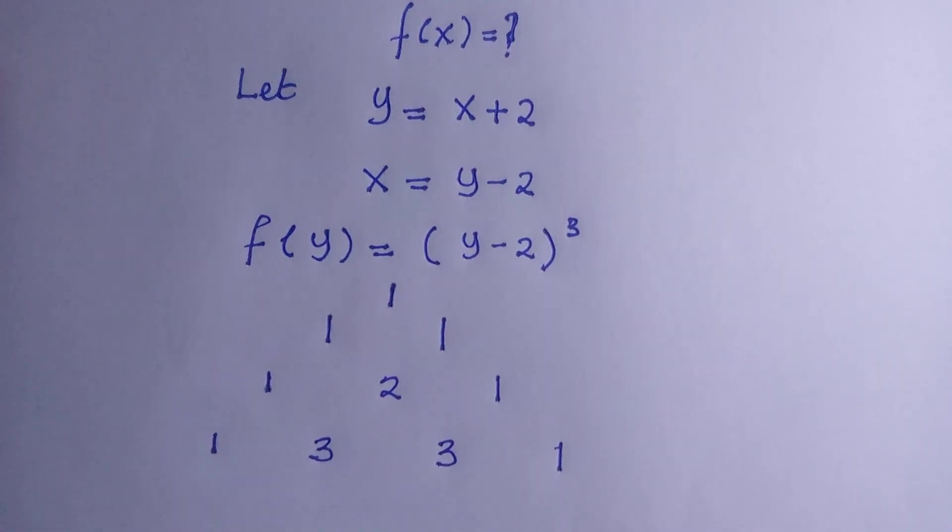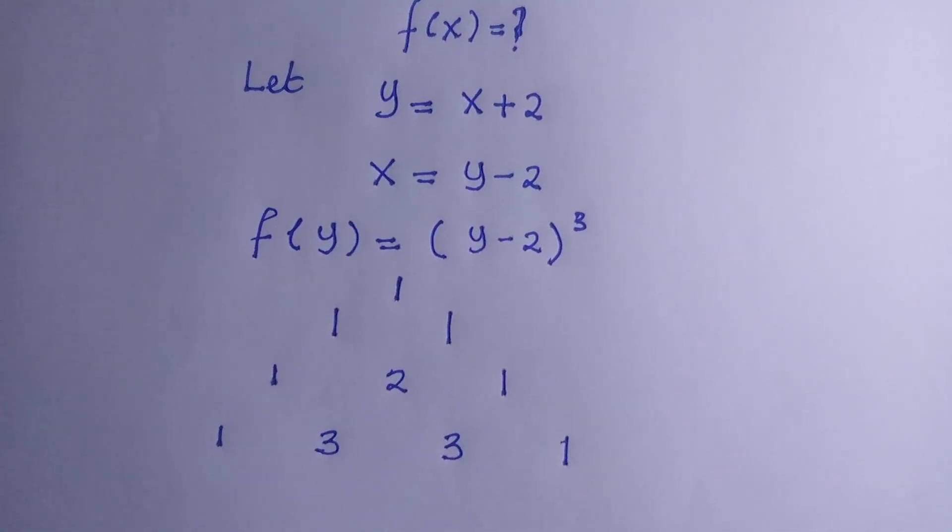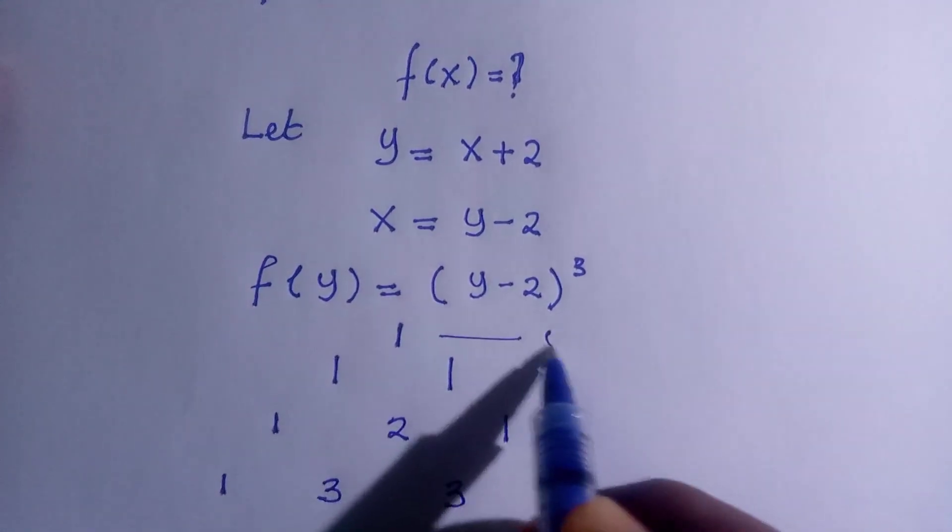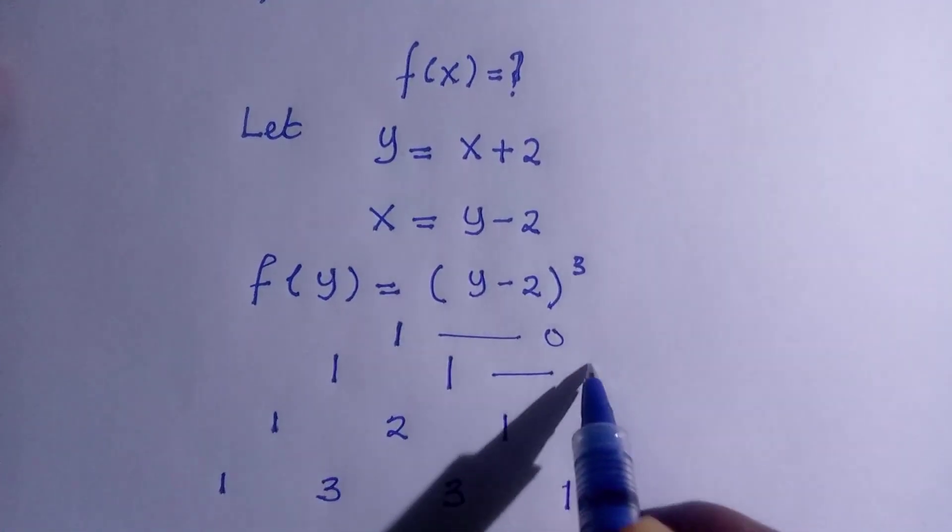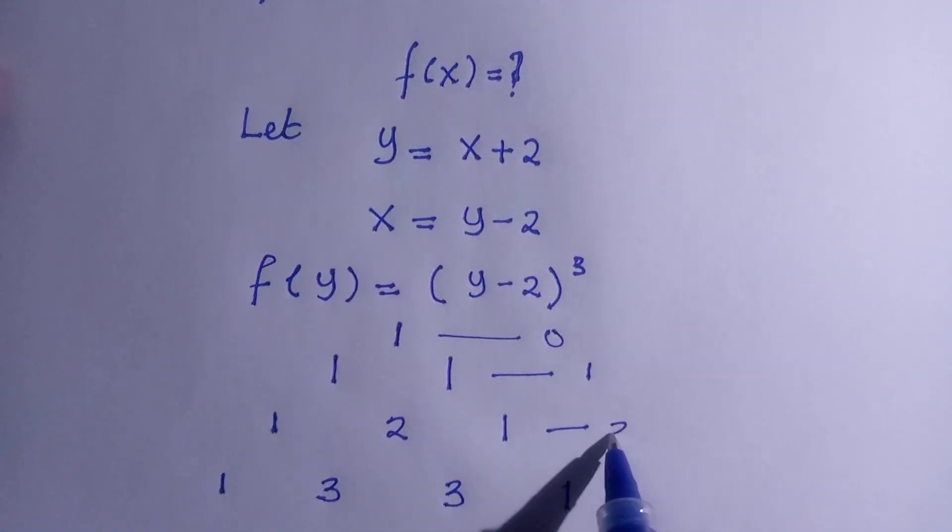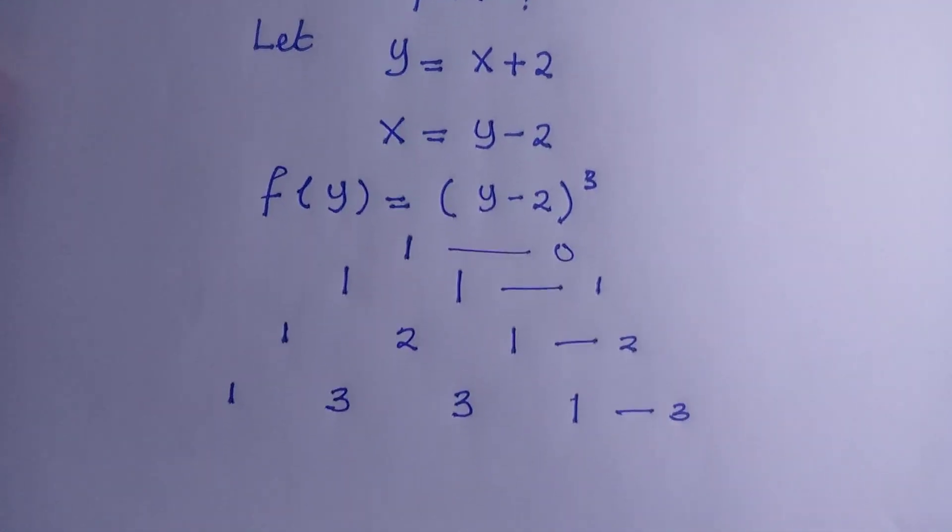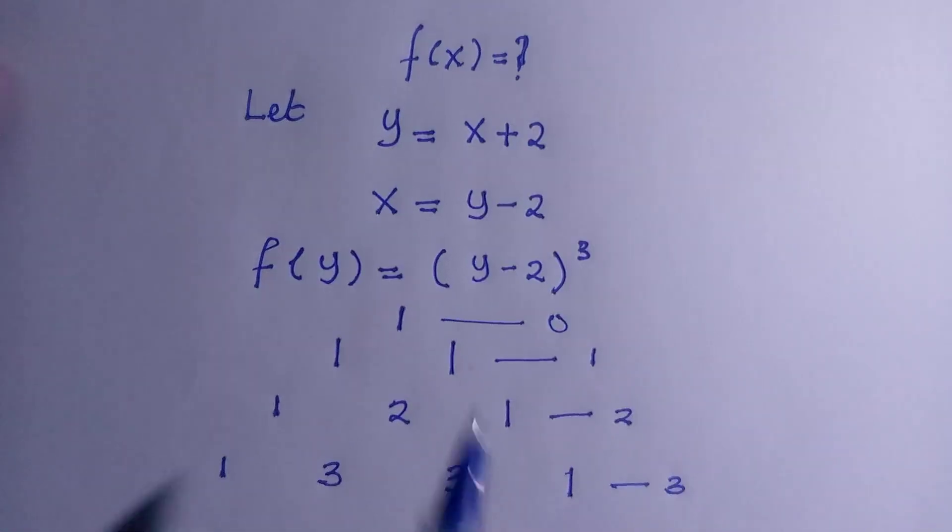So we consider this as the binomial coefficient. Here is when the power is 0, when the power is 1, when the power is 2, and when the power is 3. So we go for the last one, since the power of this one is 3.